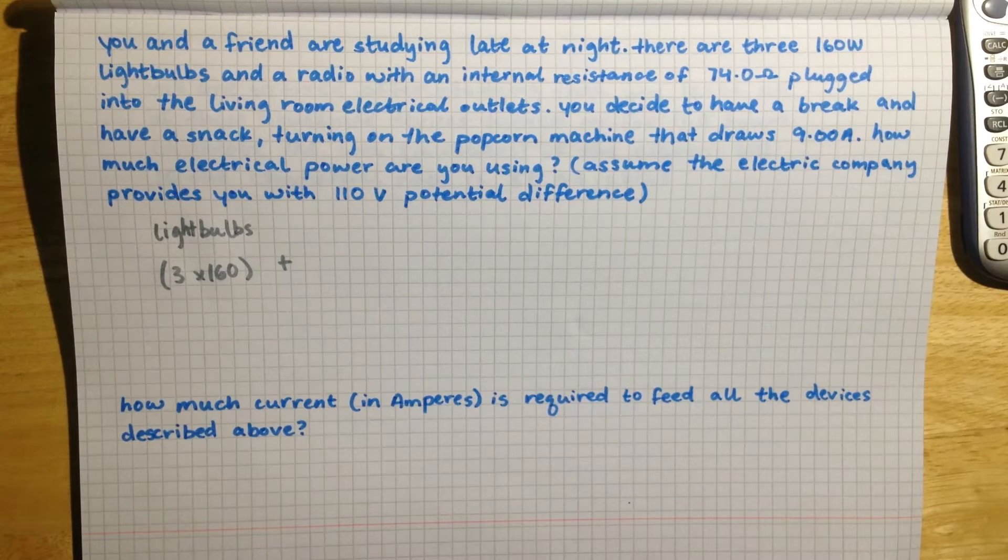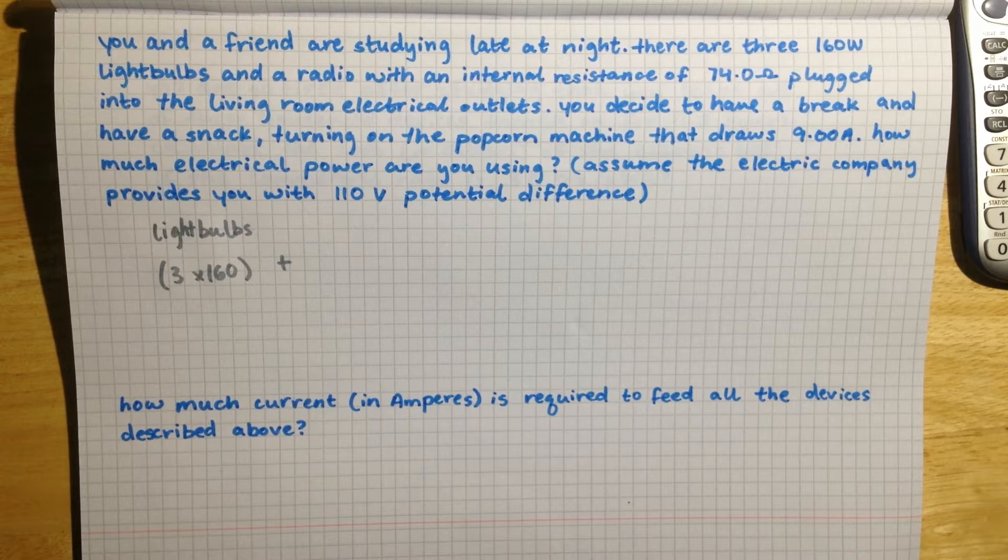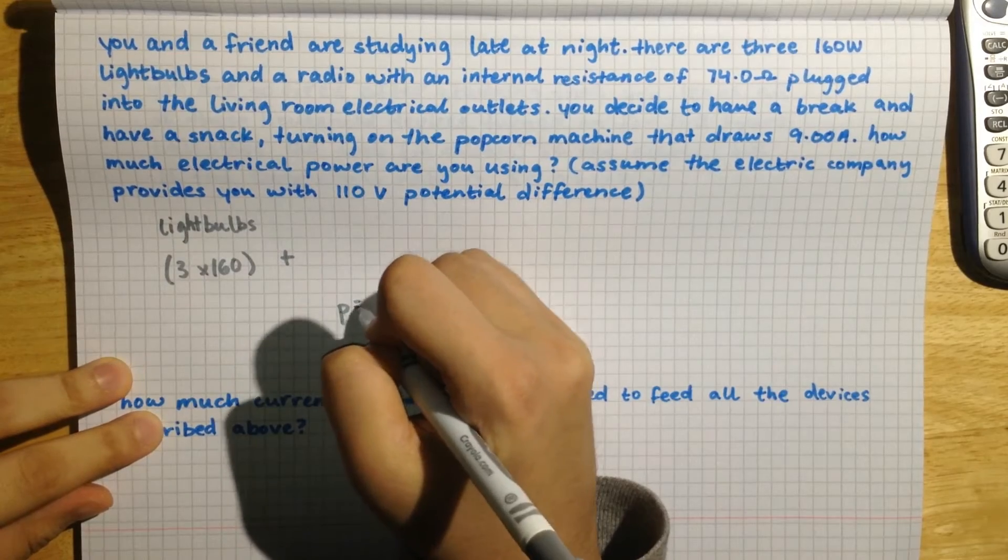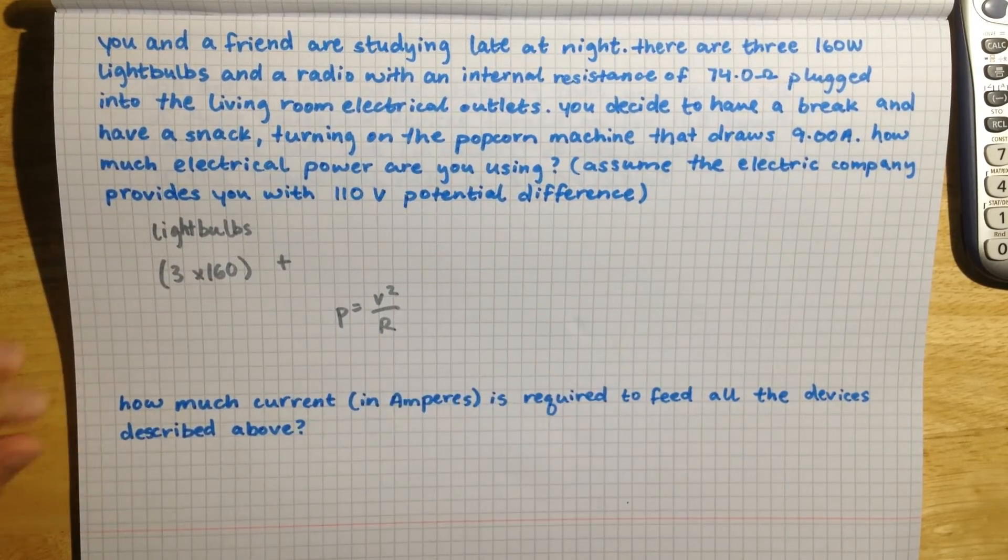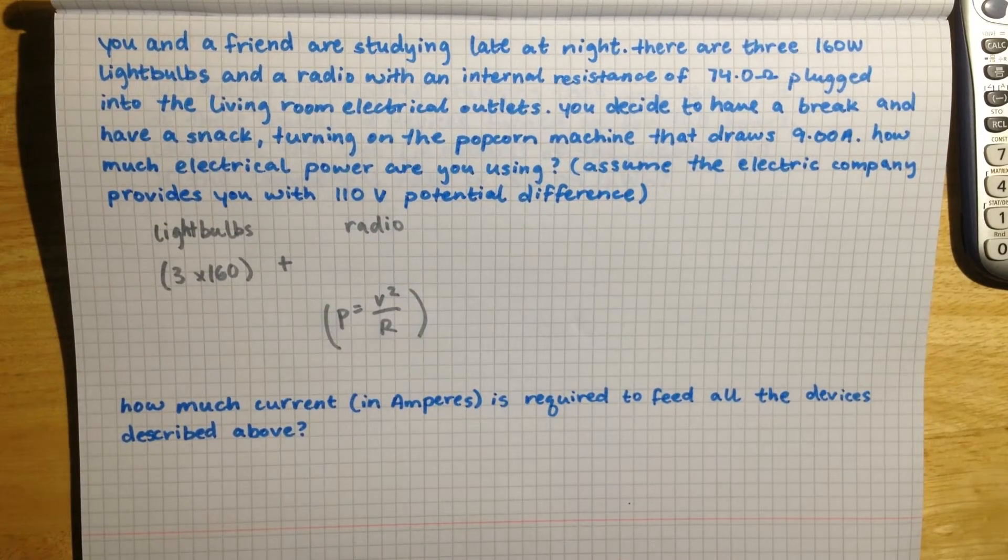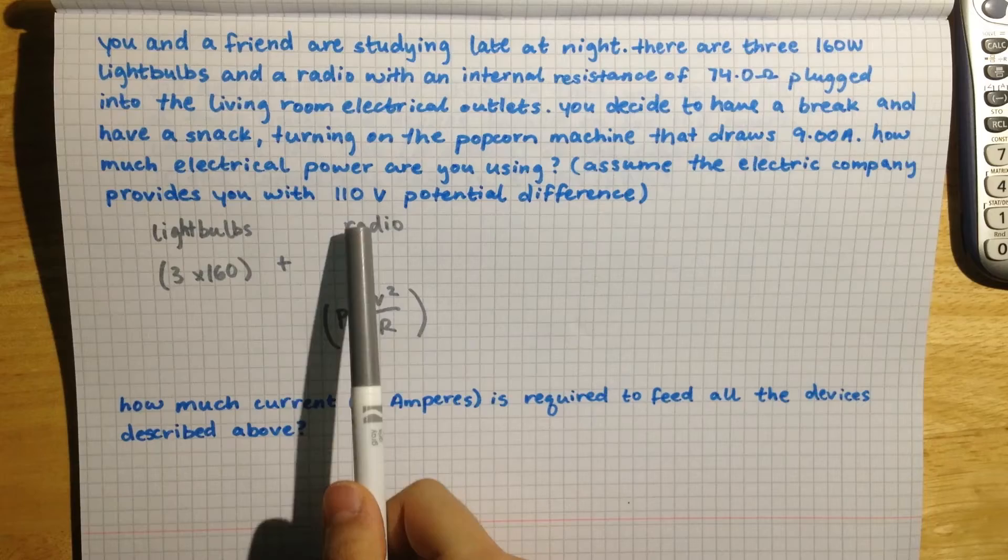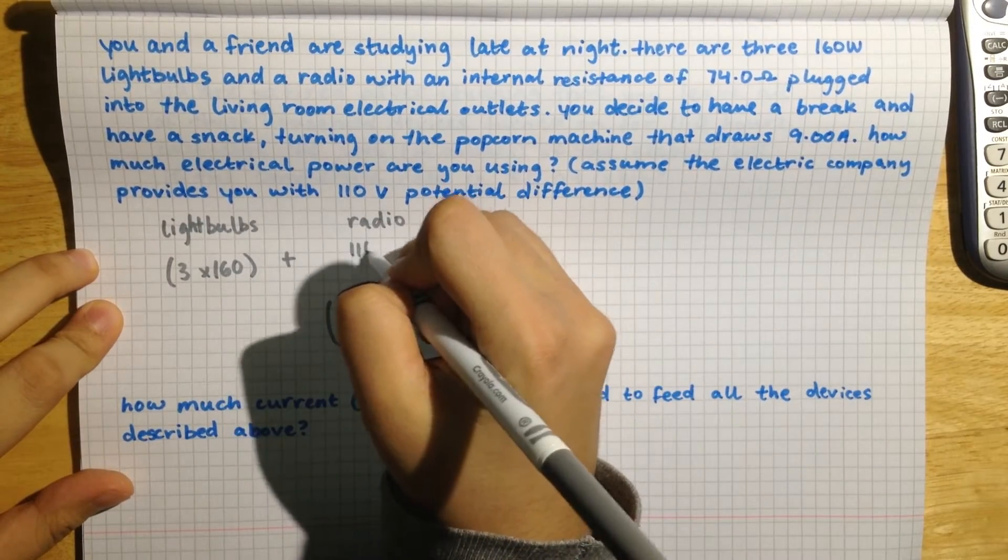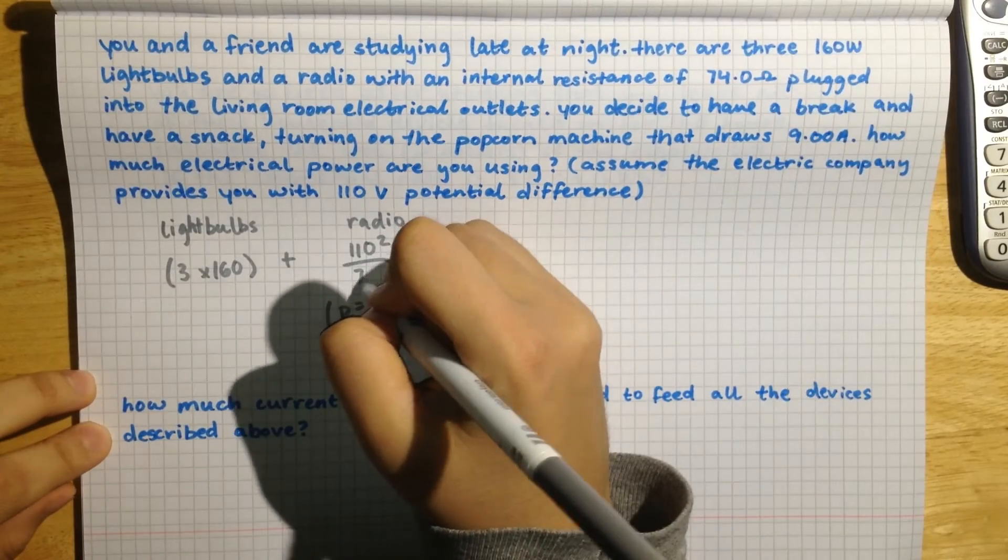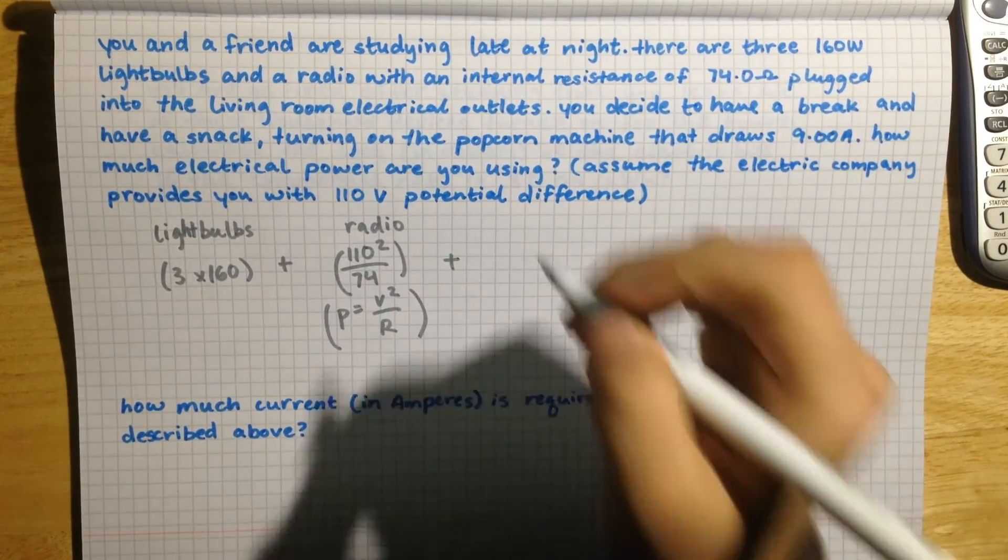Okay, so after the light bulbs there is a radio that they have given us the resistance value for, and for that we are going to use power equals V squared over resistance. So the power that the radio is taking up is going to be the voltage, which they have given us over here as 110, so 110 squared divided by the resistance as 74 ohms. So this is the power of the radio.